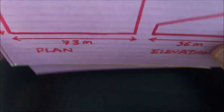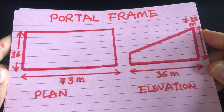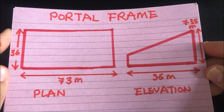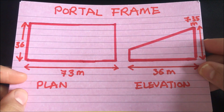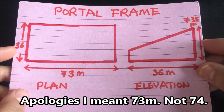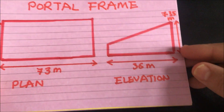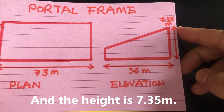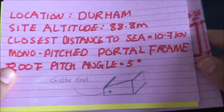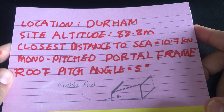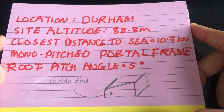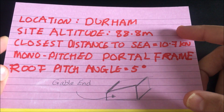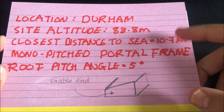So say you're in the design office and a senior engineer gives you the information for a portal frame. It has a length of 74 meters and a width of 36 meters. This is the plan view, and if you look at the elevation the width you see is 36 meters. The location of this portal frame is in Durham, and for working out the wind loading we're going to need the following information.